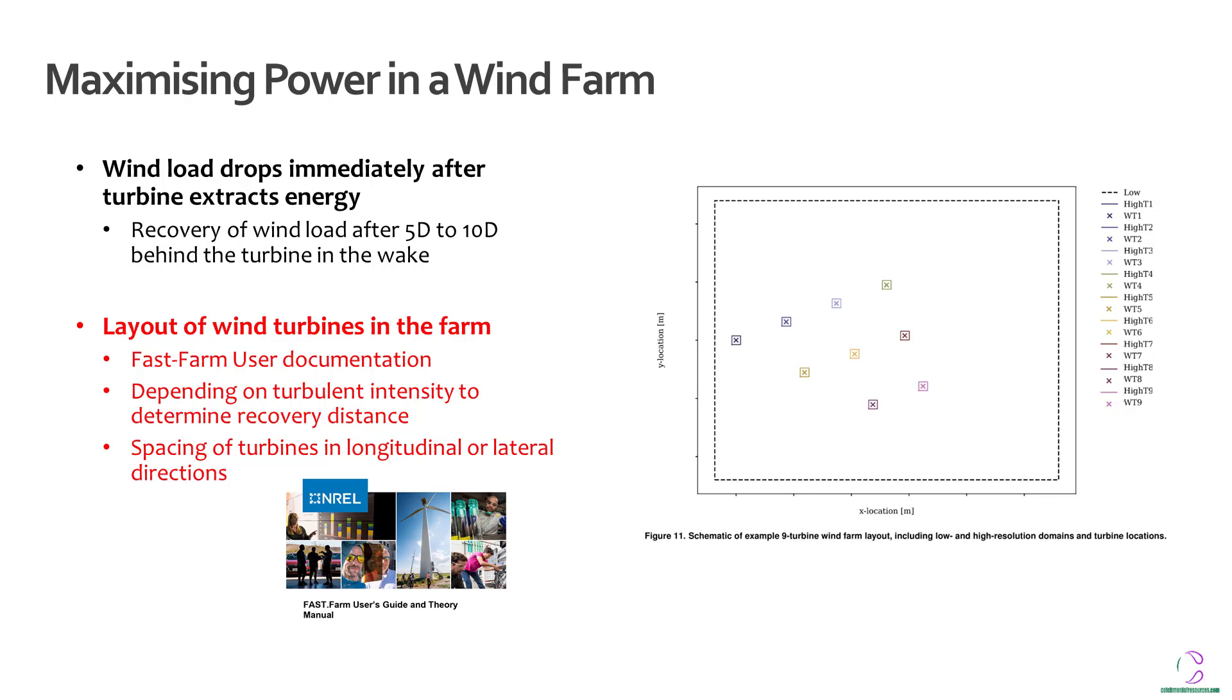So in this series, you're actually looking at the fast farm user documentation, which has more specific information for wind farms. So you can see here in this schematic how some wind turbines were arranged for the fast farm documentation, which is some of the examples that they use to explain the concept.